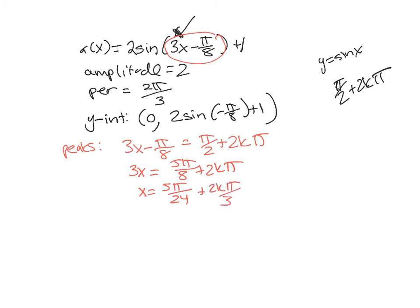And just to check here, since originally the peaks, if we were just graphing sine x, the peaks would occur every multiple, every integer multiple of the period, which then was 2 pi. It makes sense that now they're occurring every multiple of the new period, which is 2 pi over 3. Okay.